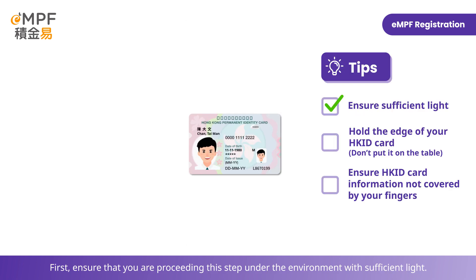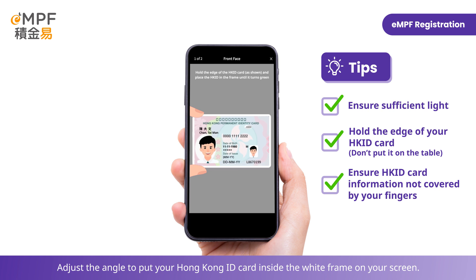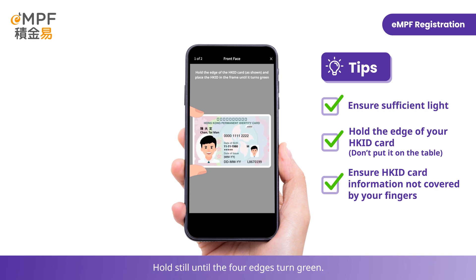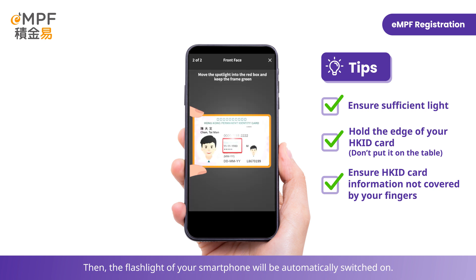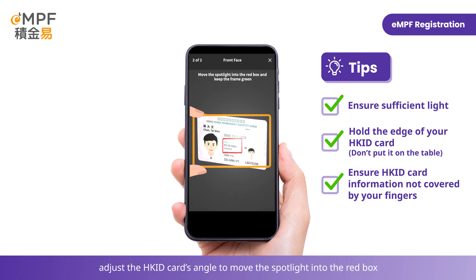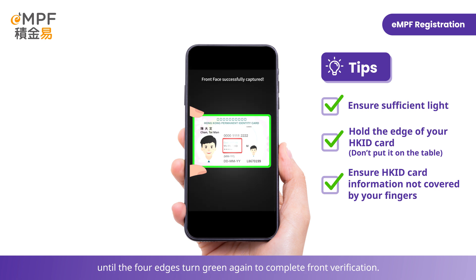Ensure that you are proceeding with this step in an environment with sufficient light. Hold the edge of the Hong Kong ID card, being careful not to cover the Hong Kong ID card information with your fingers. Adjust the angle to put your Hong Kong ID card inside the white frame on your screen. Hold still until the four edges turn green. The flashlight of your smartphone will be automatically switched on. Continue to hold still to keep your Hong Kong ID card inside the frame. Adjust the Hong Kong ID card's angle to move the spotlight into the red box until the four edges turn green again to complete front verification.